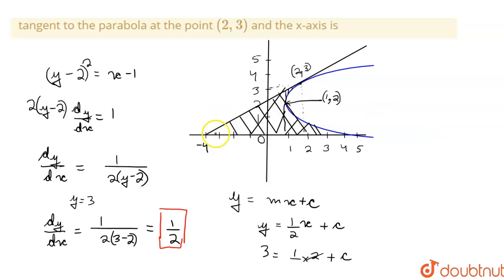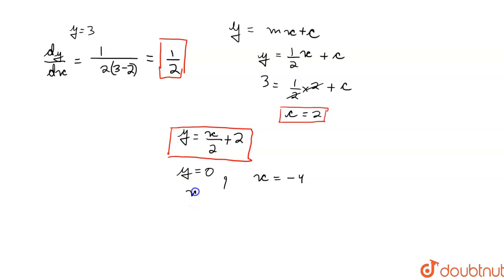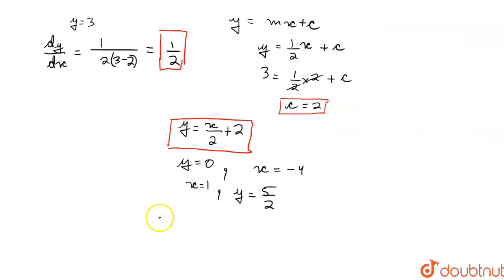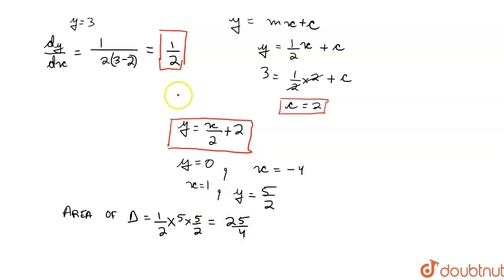First we calculate the triangle area. The base is 5 and the height is 5/2 — when we put x = 1 in the tangent equation, y comes out to be 5/2. So the area of the triangle is (1/2) × 5 × (5/2) = 25/4.